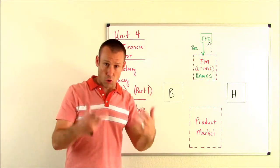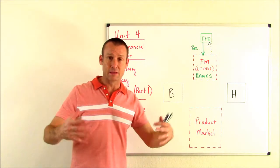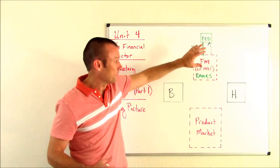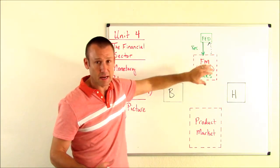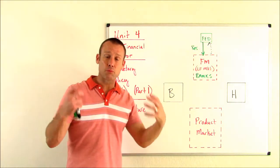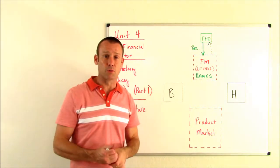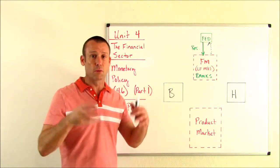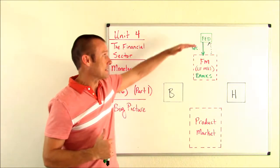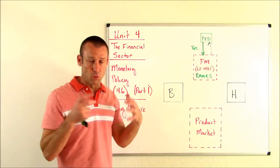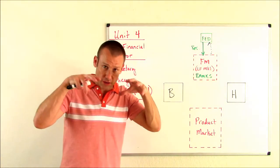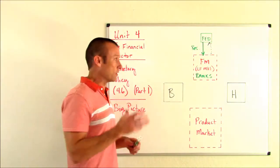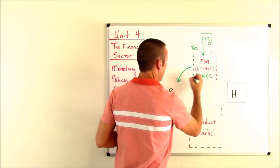So they are increasing the amount of loanable funds in the banking industry or in the banking sector. What is going to happen to the price of loanable funds if they're increasing the amount of loanable funds? It's going to go down. The interest rate that is, it's going to go down because the price of loanable funds, the interest rate, the interest rate is going to go down. That's exactly what the Fed wants to do. That's what they're trying to do. Let's push money in. Let's get interest rates to go down, trying to encourage businesses and households to then go to that financial market and borrow money.